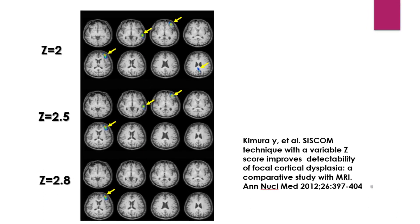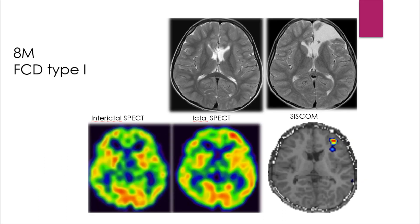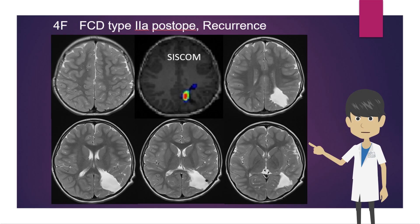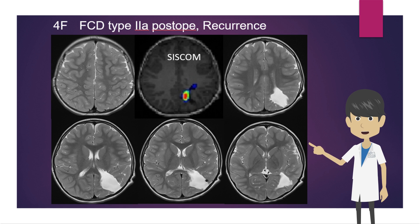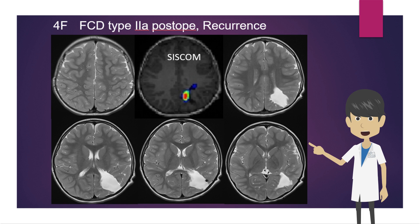This is a surgical case of left frontal lobe epilepsy. The pathology confirmed focal cortical dysplasia type 1. There is increased perfusion in the left frontal lobe during seizures, which is clearly detected by SISCOM. This is a post-operative case of left occipital lobe epilepsy. Pathology confirmed focal cortical dysplasia type 2a. After surgery, recurrent epileptic seizures were observed and SISCOM analysis was performed. Increased perfusion was found in the left medial parietal lobe, which is distant from the surgical site. SISCOM can be useful for focus detection in such recurrent cases.